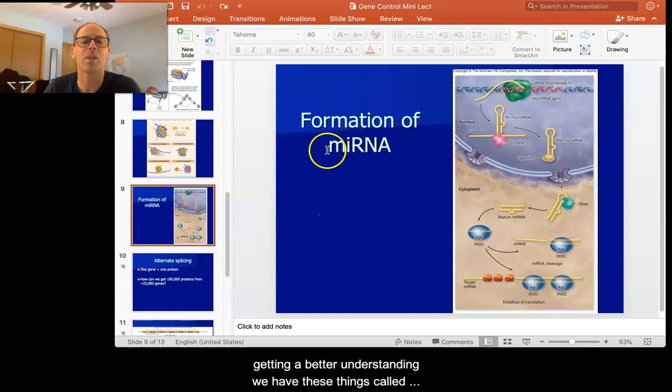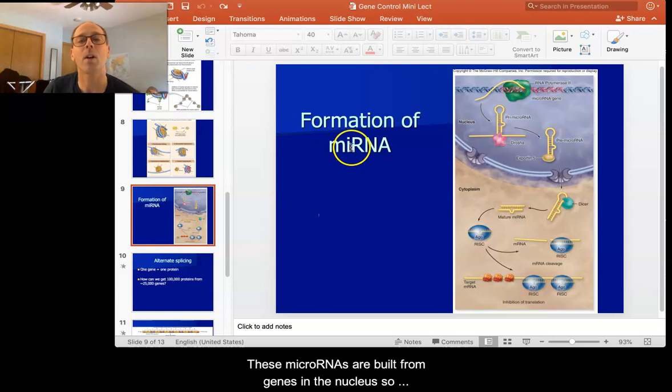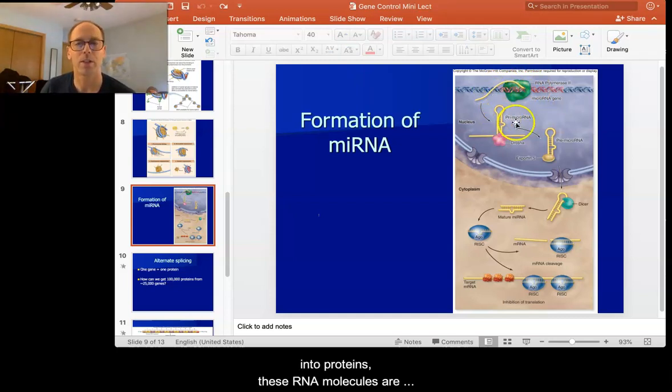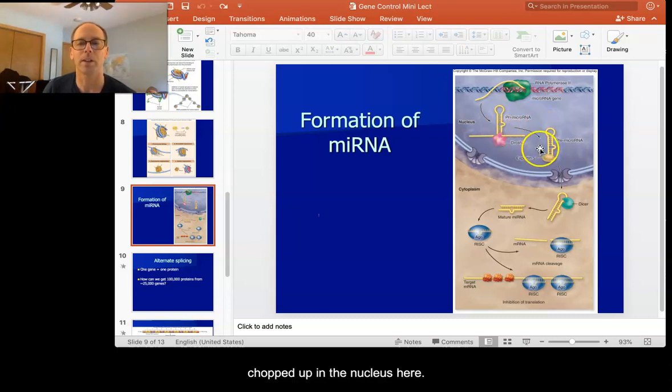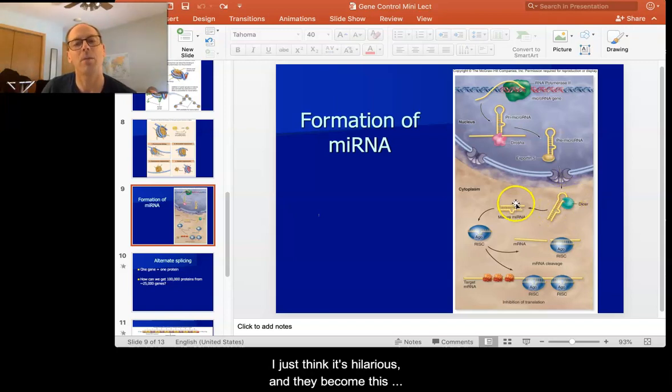We have these things called micro RNAs. So the miRNA here stands for micro RNA. These micro RNAs are built from genes in the nucleus. So they are actually transcribed, but rather than be translated into proteins, these RNA molecules are chopped up in the nucleus here. They actually leave the nucleus, they get modified by this protein called Dicer, which I just think is hilarious.